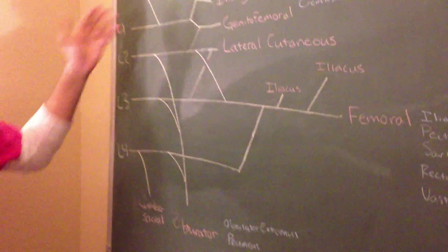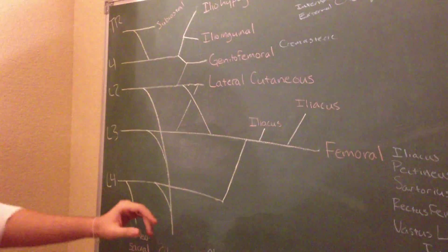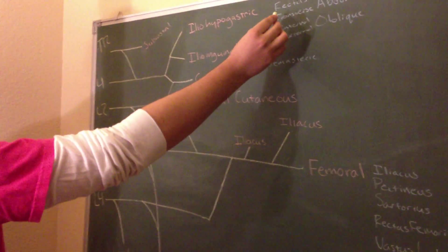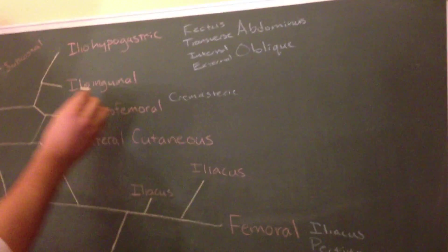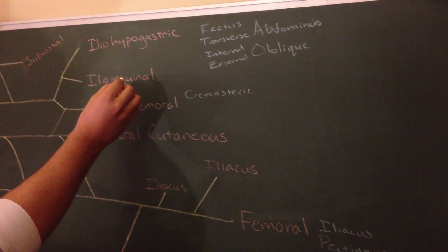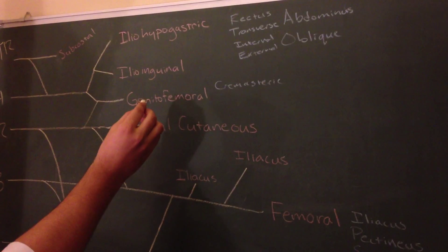Okay, so the muscles that these nerves are all serving are going to be the iliohypogastric serves the rectus abdominis and the transverse abdominis, and the internal and external obliques. Ilioinguinal, exactly the same set of muscles. The only difference is these both have different cutaneous innervations.